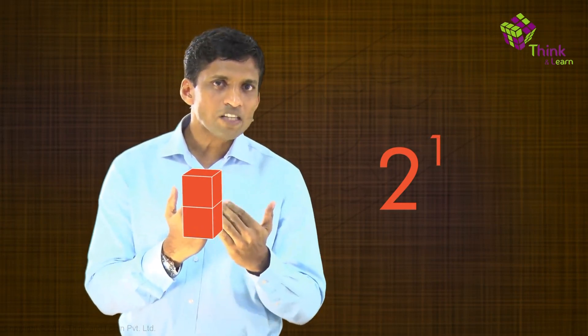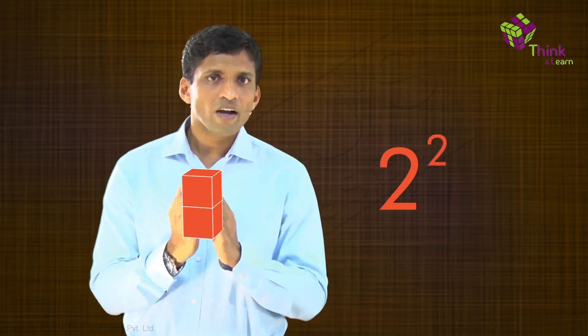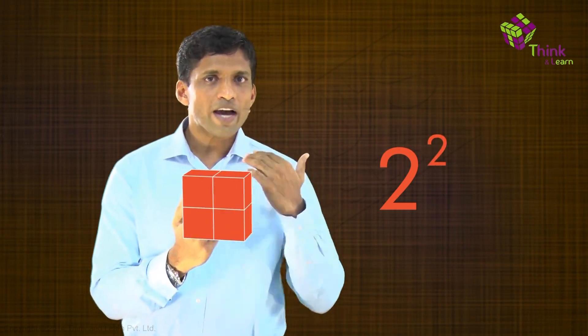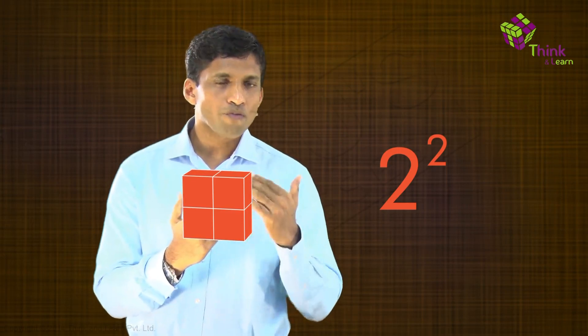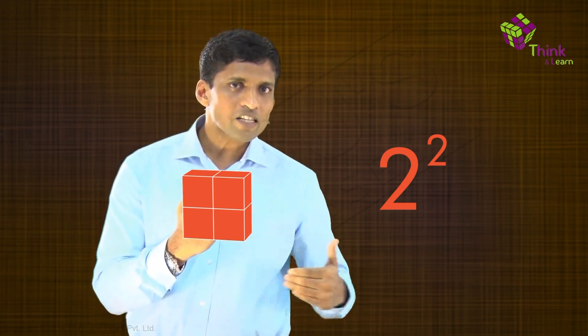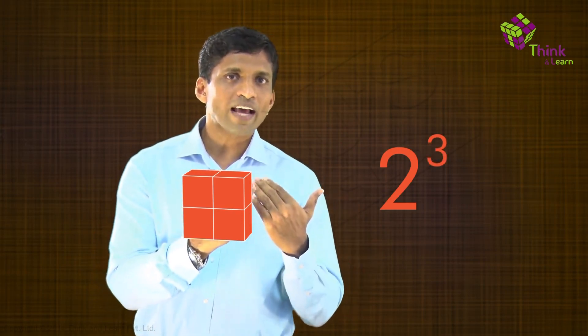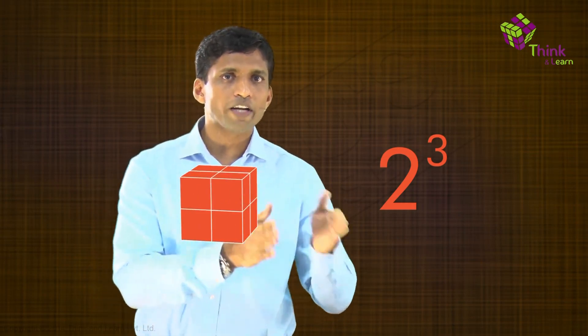Now multiplying this by 2 means it will become 2 to the power of 1. I just need to add one more on top — it's actually a row now. Now if I multiply this by 2 again, it will become 4 or 2 squared. I just need to make this a square, adding one more row here. So you can see a square of unit cubes here — four of them in fact. Now if I multiply this by 2 again, it will become 8 or 2 cubed. I can just convert the diagram into a cube like this, and you will see 8 unit cubes. This is a cube of unit cubes.